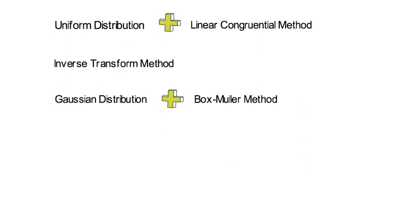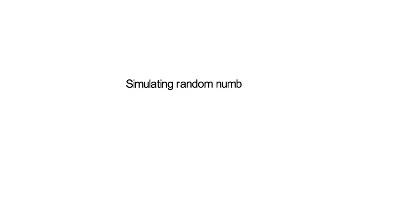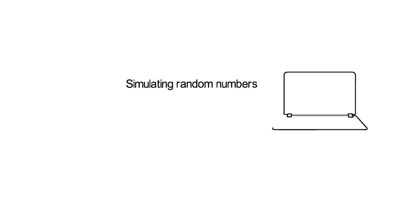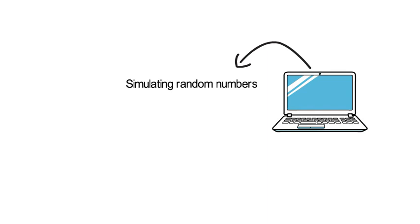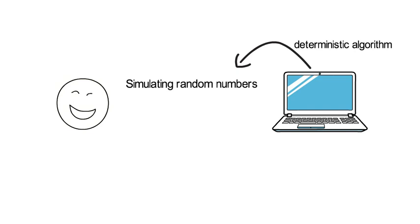Before digging into the topic, notice the following. Simulating random numbers is at the core of any Monte Carlo simulation exercise. Random numbers that a computer generates appear random but are produced by a deterministic algorithm. That has the advantage that everyone is able to rerun simulations with exactly the same sequence of random numbers. So strictly speaking, we could talk about a pseudo-random number generator.